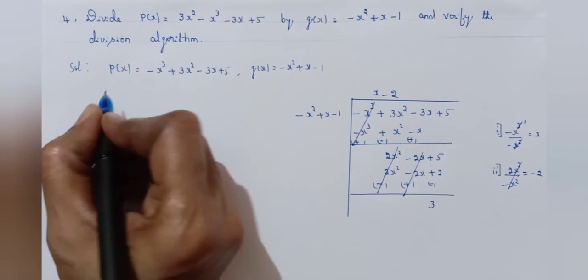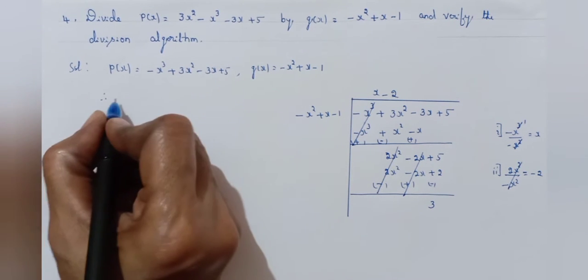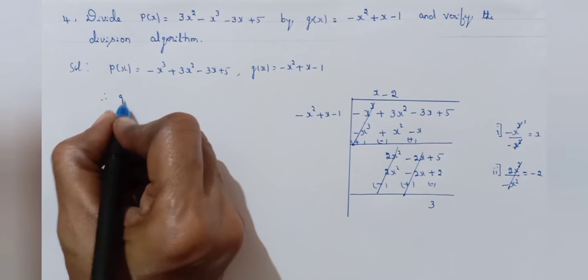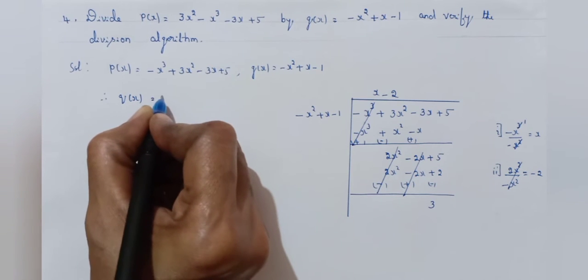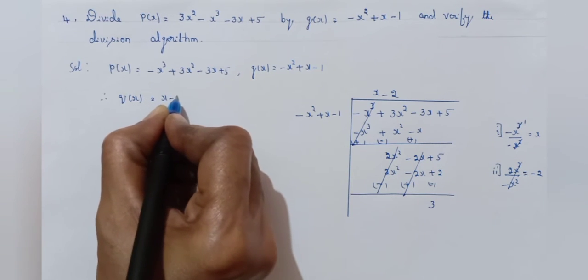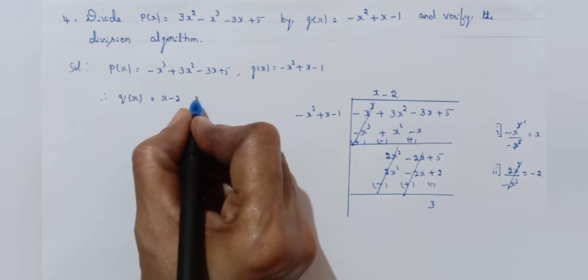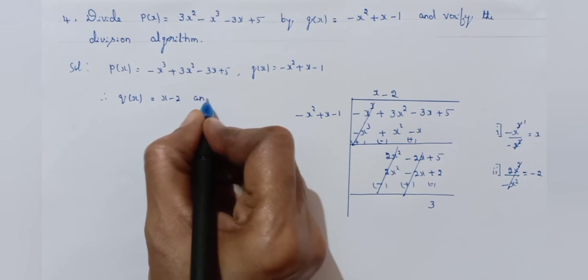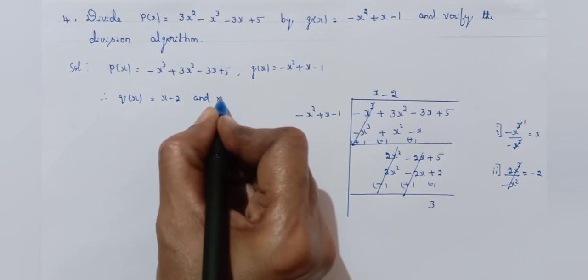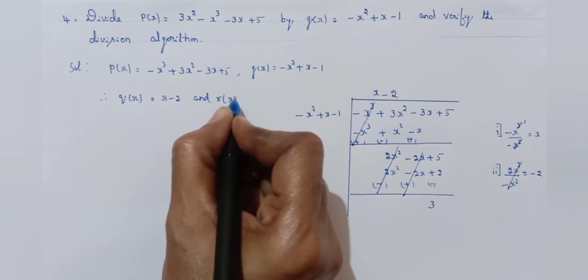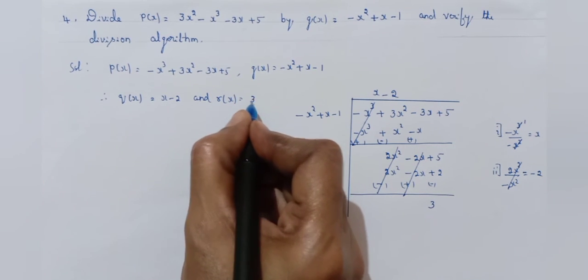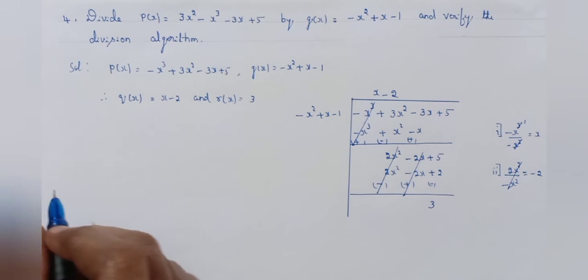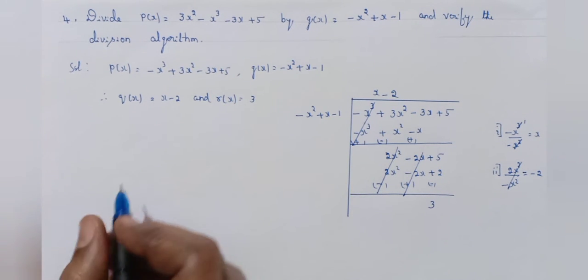Therefore the quotient q of x is x minus 2 and the remainder r of x is equal to 3. Next is verification.